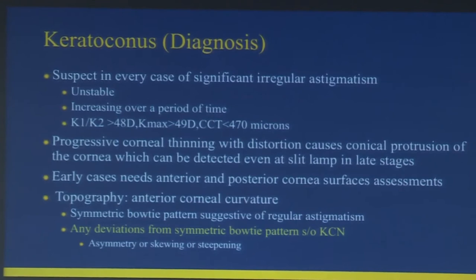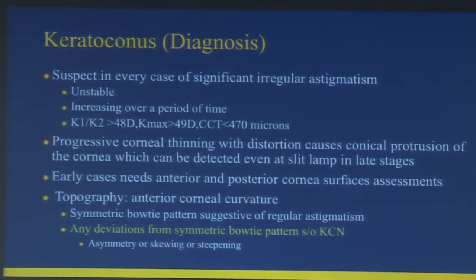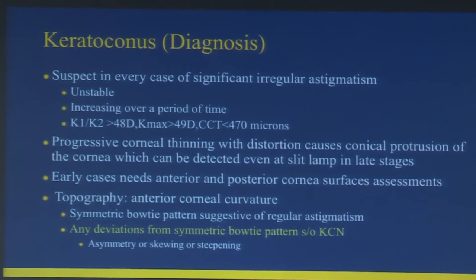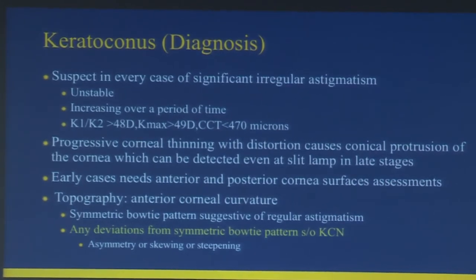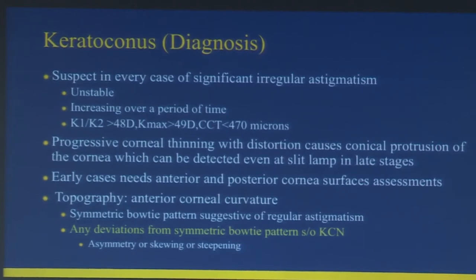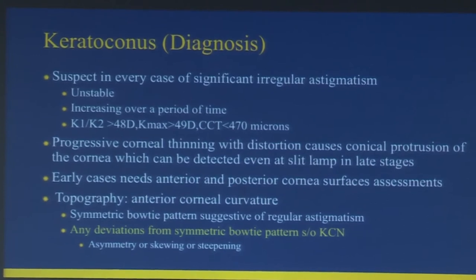The best way not to miss keratoconus is to suspect it in each and every case of irregular astigmatism that is unstable and increases over time. We suspect keratoconus when K1 and K2 are more than 48, Kmax is more than 49, and central pachymetry is less than 470 microns.